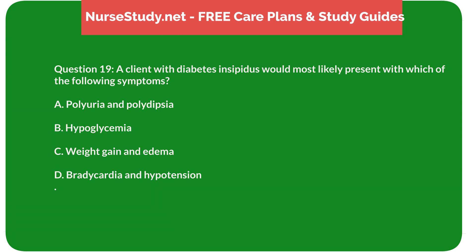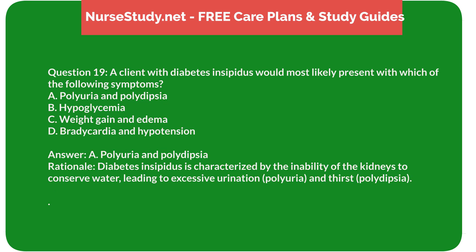Question 19: A client with diabetes insipidus would most likely present with which of the following symptoms? A) Polyuria and polydipsia, B) Hypoglycemia, C) Weight gain and edema, D) Bradycardia and hypotension. Answer: A, Polyuria and polydipsia. Rationale: Diabetes insipidus is characterized by the inability of the kidneys to conserve water, leading to excessive urination (polyuria) and thirst (polydipsia).